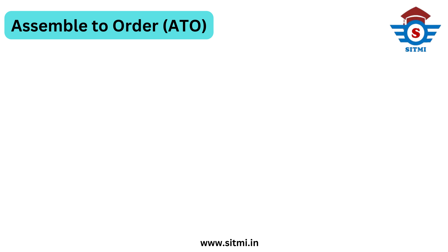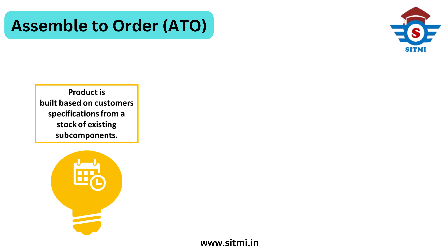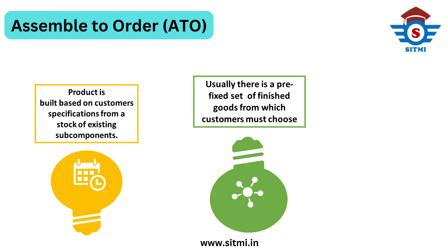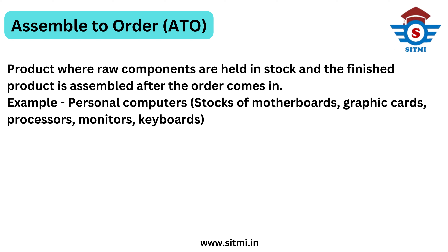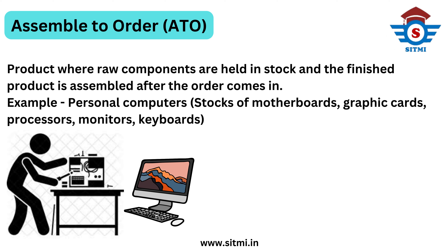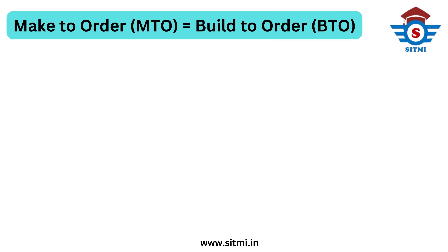Next is the Assemble to Order environment. In an Assemble to Order production environment, the product is built based on customer specification from available raw material or stock of existing components. Usually there are a pre-fixed set of finished goods from which customers must choose. Simply put, raw components are held in stock and finished goods are assembled only after an order from the customer is received. The best example is personal computers, where a shop keeps stock of motherboards, graphics cards, processors, CPUs, monitors, and keyboards, and assembles them only when a customer order is received.